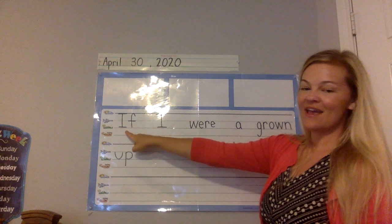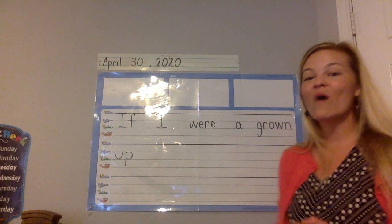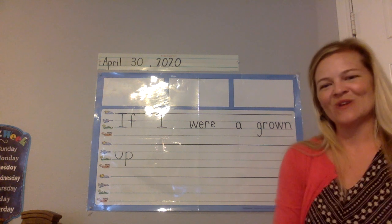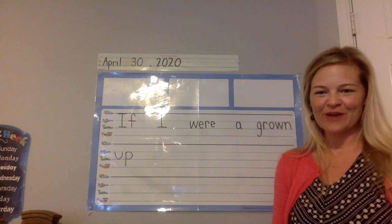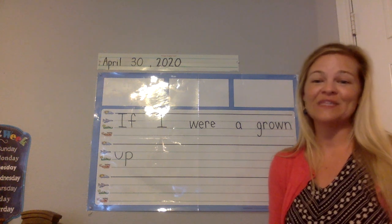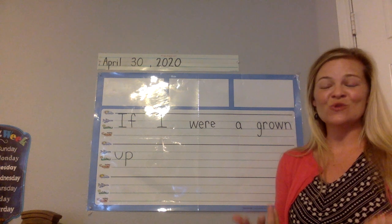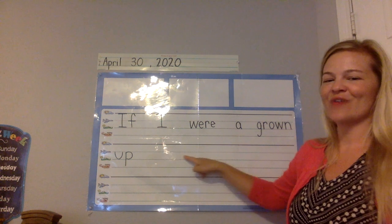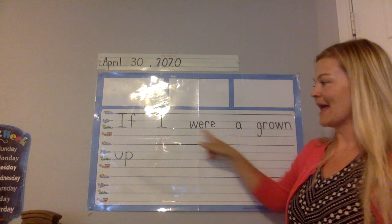Let's read our sentence: "If I were a grown up." What would you do if you were a grown up? Think about it — it could be something silly, like "If I were a grown up, I would eat ice cream for breakfast," or "I would live in my own house," or "I would adopt all the pets in the world." Or it could be something serious, like "I would make sure to visit my parents" or "I'd be nice to everybody." Think about something you'd want to do, sound it out, and finish your sentence. Make sure you have a period at the end, then do your illustration. You can pause the video now to catch up on your writing.